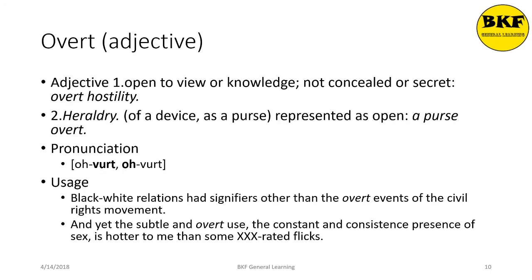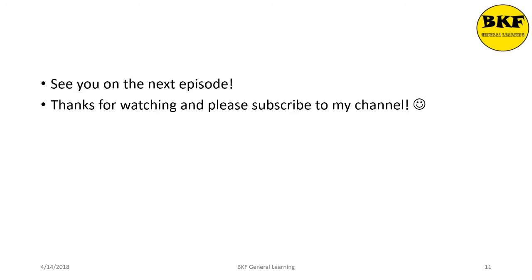Overt is an adjective; it means not considered a secret — done openly. There are multiple pronunciations. Usage: 'The subtle and overt use, the constant and consistent presence of sex is more compelling to me than some triple-X-rated flicks.' Okay guys, that was it for this episode. Thanks for watching — please subscribe to my channel, see you in the next episode!